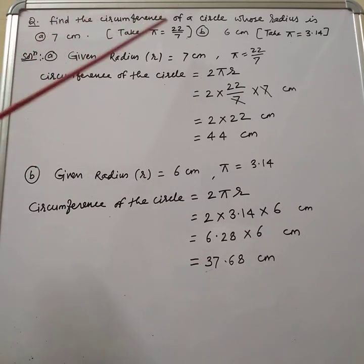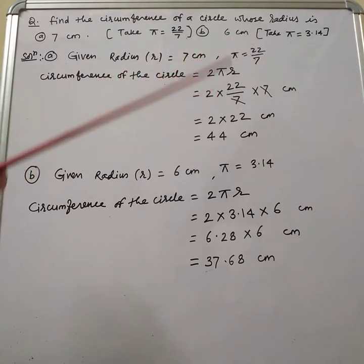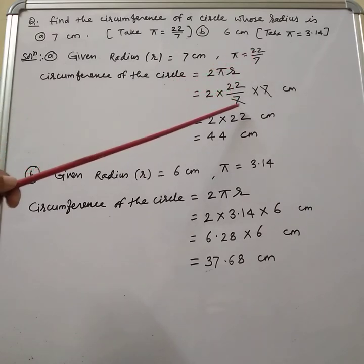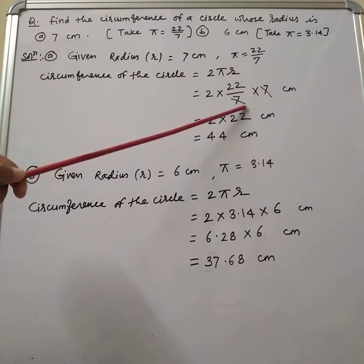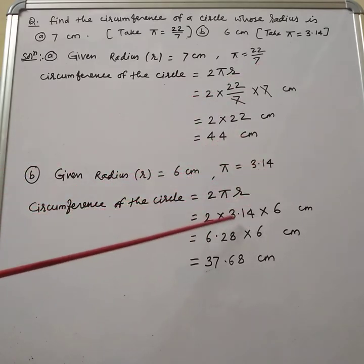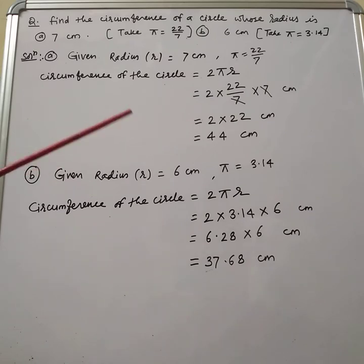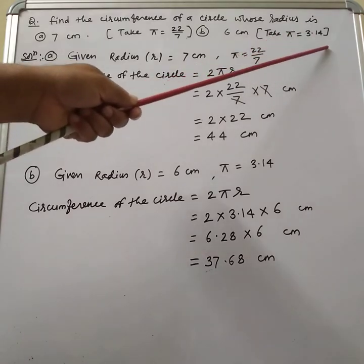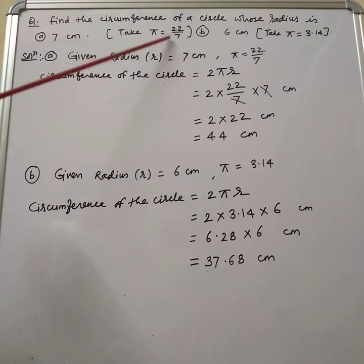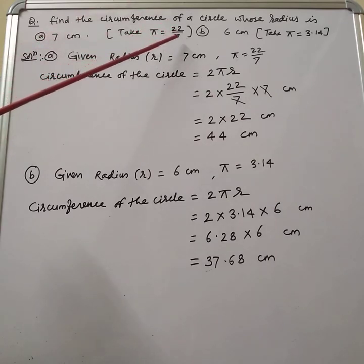In general, if the value of pi is given as 22 by 7, it is likely that the radius is a multiple of 7, so you can simplify. If pi is given as 3.14, you multiply the values directly. In this way, you can calculate the circumference of a circle when the radius is given. The value of pi is always 22 by 7 or 3.14 — use whichever is specified. If not specified, the choice is yours. If you have any queries, comment in the comment box. Enjoy learning.